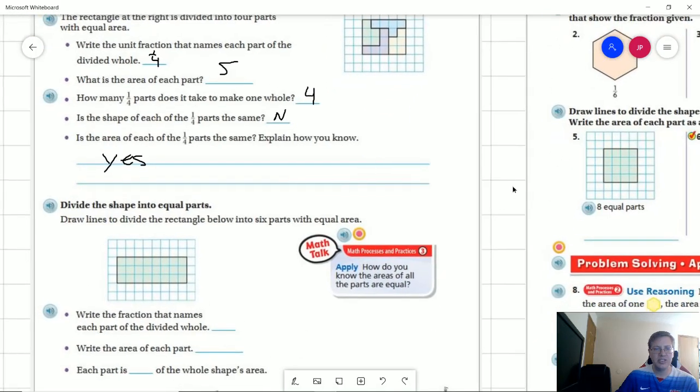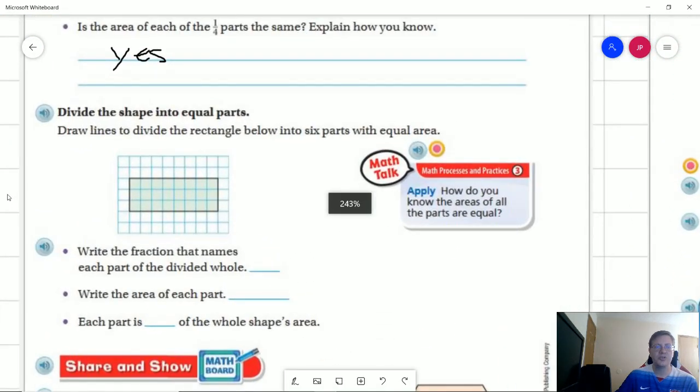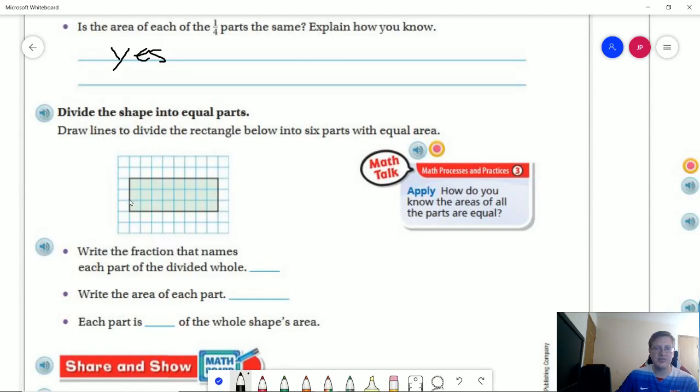So as we go to this one, we want to draw a rectangle and divide it into six equal parts. So the easiest way to do that would be to take our shape and go this way. So we make three equal rows out of the shape, and then we can go down the middle here. And so I'm going to have six equal parts. Our fraction that names one part, our unit fraction, would be one-sixth. The area of each part is going to be one, two, three, four unit blocks. And each part would be one-sixth of the whole shape's area.